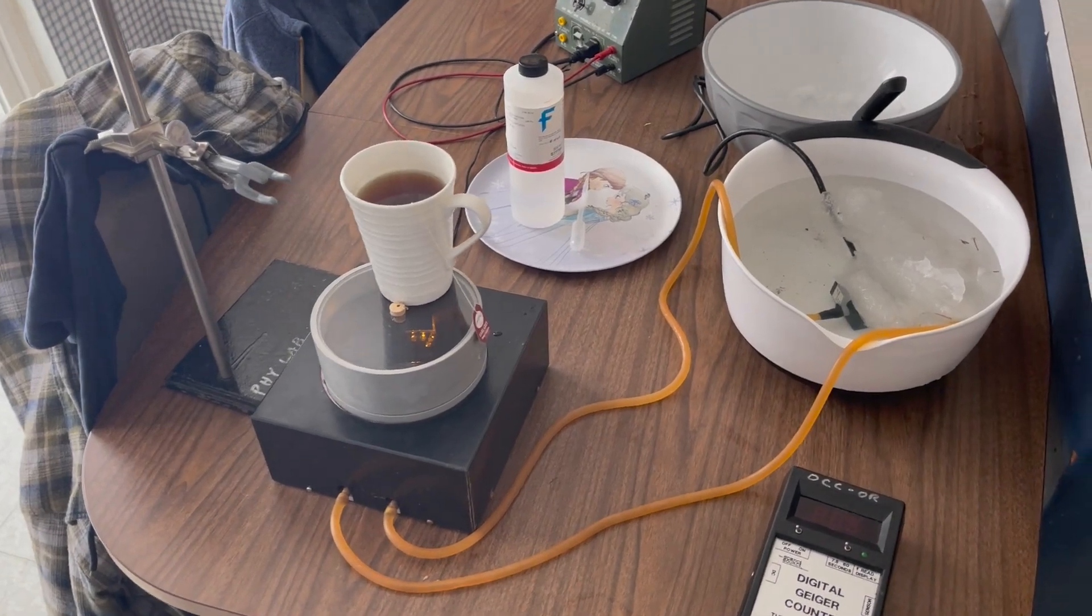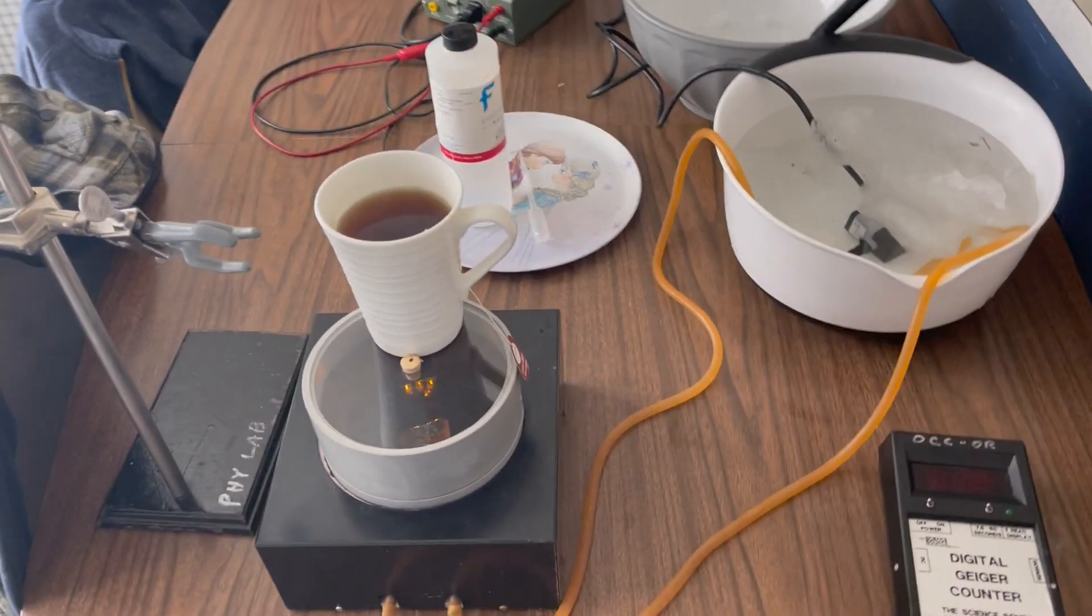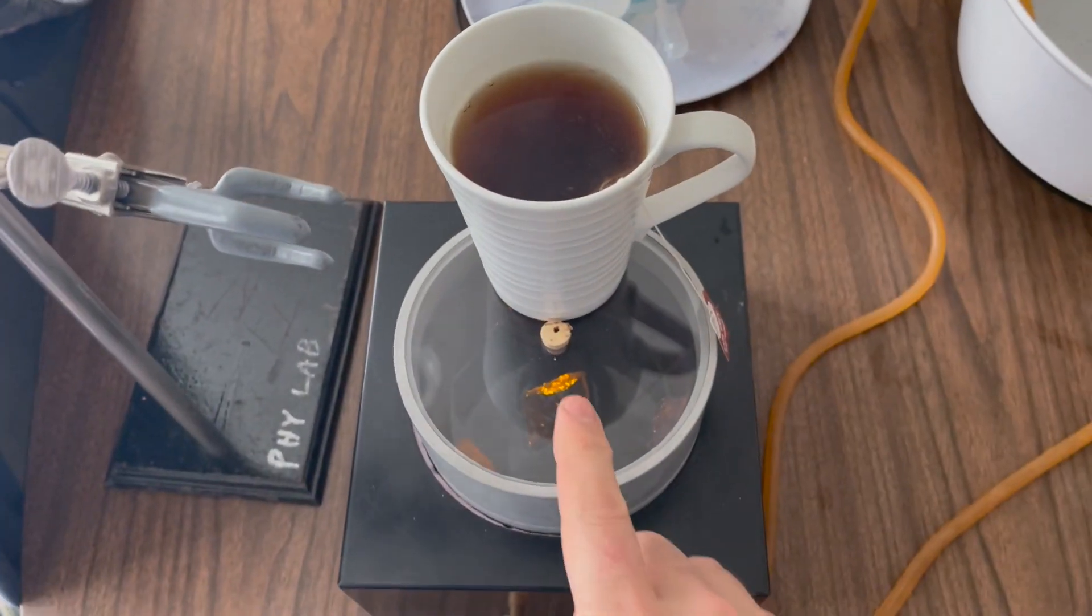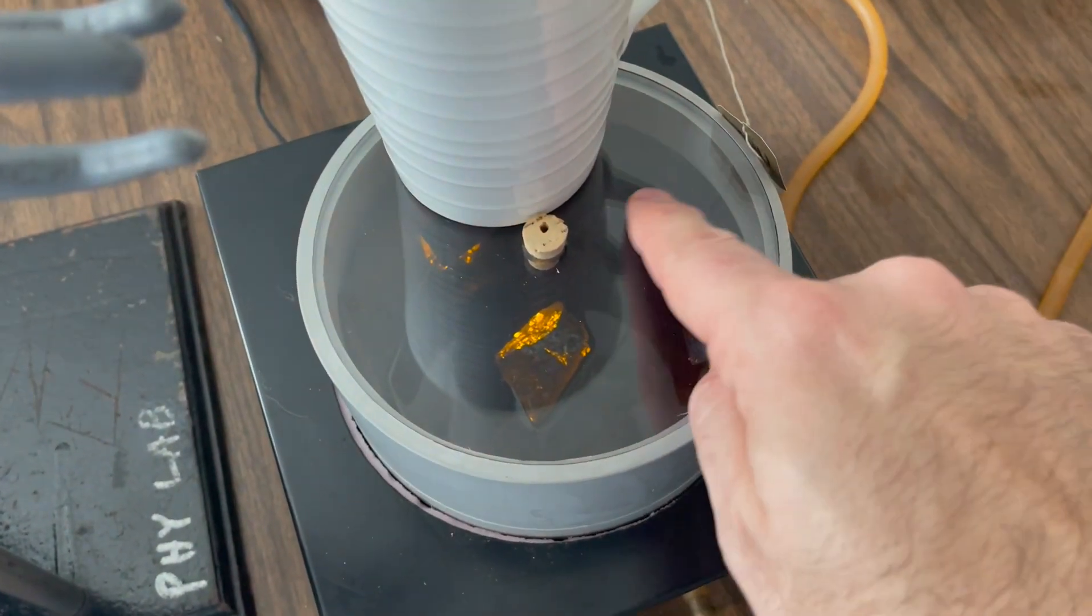Hey everyone, I'm Jesse Mason and welcome to my kitchen. Today on my kitchen table I have a cloud chamber. We are cooking up clouds. The way we're doing this is taking 99% isopropyl alcohol and we're wicking it up along the sides using this felt material.